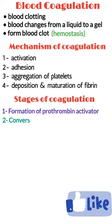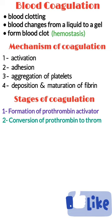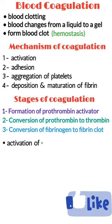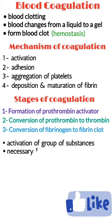Stage 2: Conversion of prothrombin into thrombin. Stage 3: Conversion of fibrinogen into fibrin clot. Due to the activation of a group of substances which are necessary for clotting, these are called clotting factors.